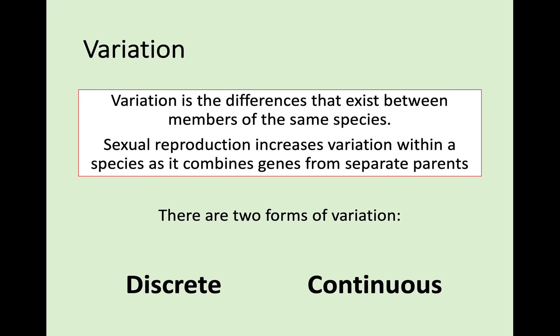Variation is increased through sexual reproduction because it combines genes from separate parents. You get some genes from your mum and some genes from your dad, and that's why you'll look like a bit of a mix of them — because you're having two different sets of genes being passed into you, making you a unique individual.